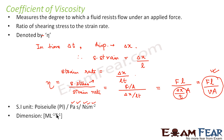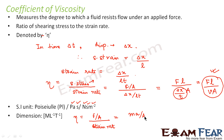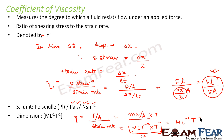The dimension of coefficient of viscosity is M·L⁻¹·T⁻¹. To derive this: shearing stress is force per unit area, and force is mass times acceleration, so we have M·L·T⁻² divided by L². Strain has no dimension, so strain rate contributes a factor of T (per unit time). This gives M·L·T⁻² · T / L² = M·L⁻¹·T⁻¹, which is the dimension for the coefficient of viscosity.